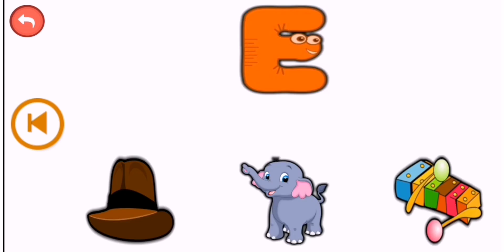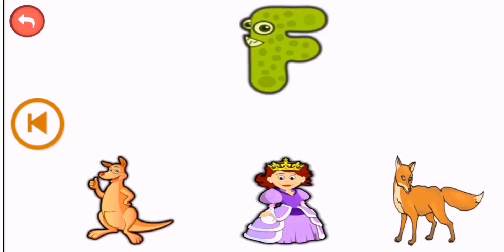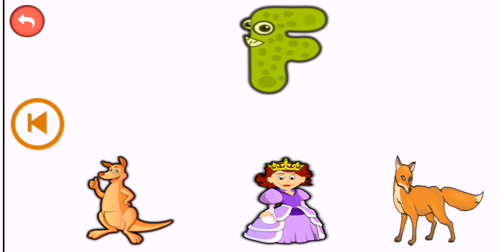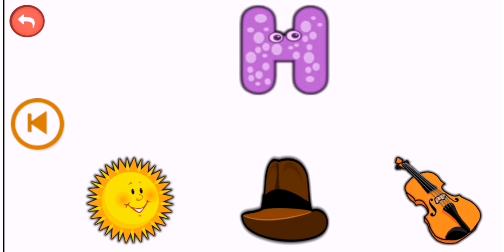Guess below the picture. E — elephant. F — fox. G — goat. H — hat.